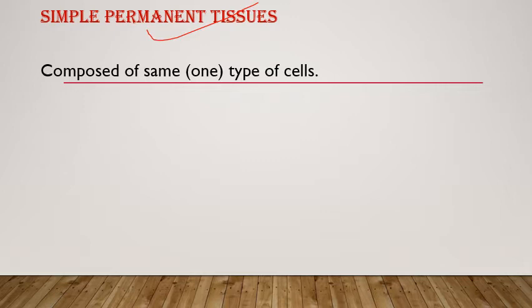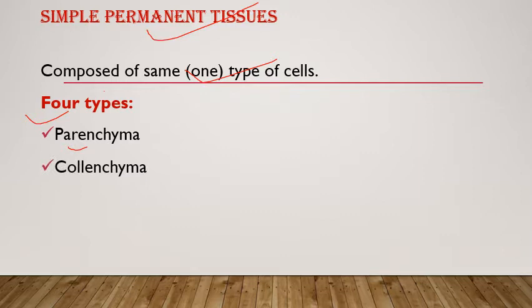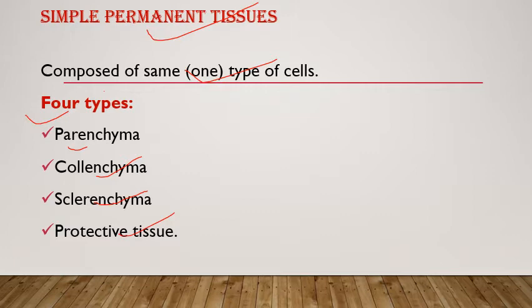Simple permanent tissue — as the name says, it is made up of one type of cells. It is of four types: parenchyma, colenchyma, sclerenchyma, and protective tissue. Protective tissues include epidermal tissue, cuticle, and all tissues that provide protection.